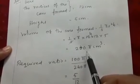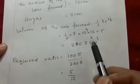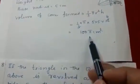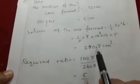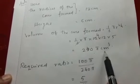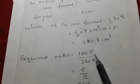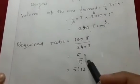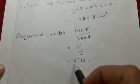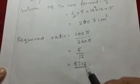Now we find the ratio of the volumes of the two solids from questions 7 and 8. Question 7 gave volume = 100π cm³ and question 8 gave volume = 240π cm³. So the ratio = 100π / 240π = 5/12, that is 5 : 12.